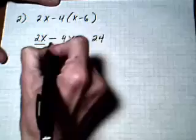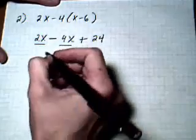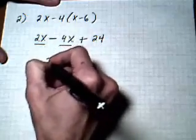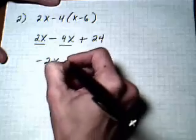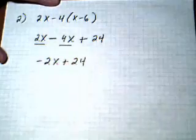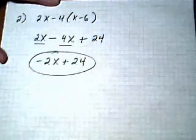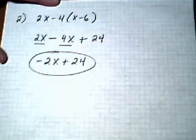Now, I have 2x take away 4x. Those are like terms. 2 take away 4 is minus 2x. Bring down the 24 with the addition, and then we've got minus 2x plus 24 for our final answer.